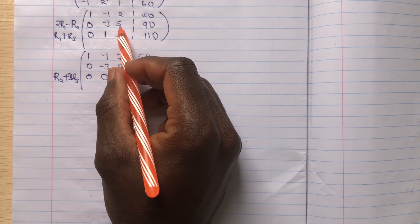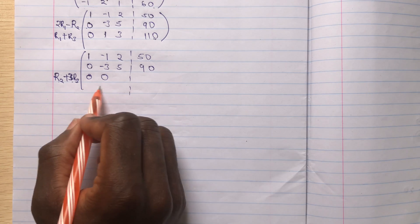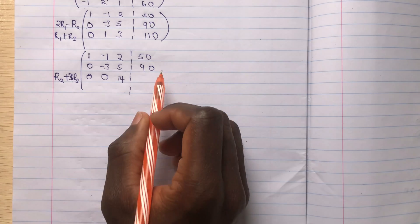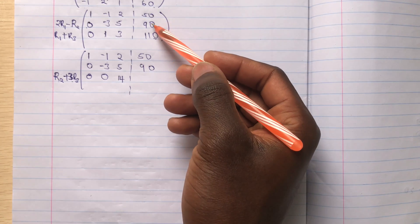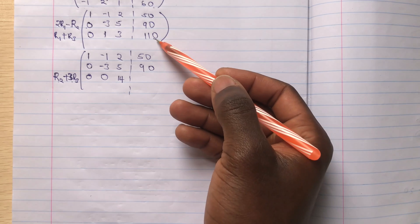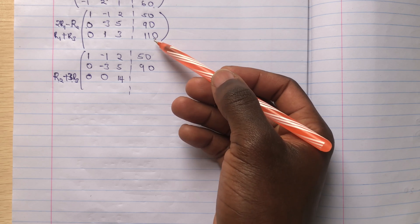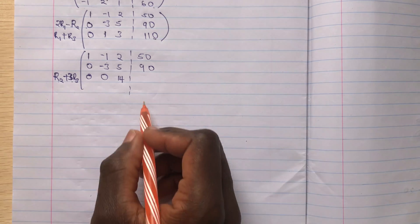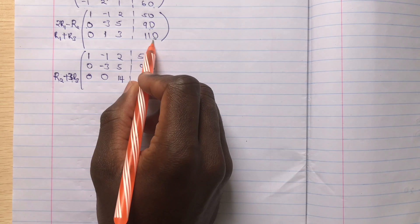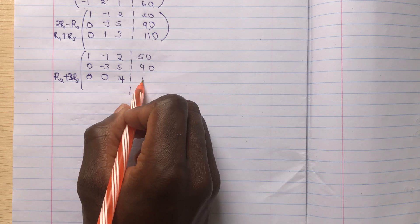Now going to this, this will be 5 plus 3 times 3, that's 9. So 5 plus 9, you get 14. Then here we go to 90 plus 110 times 3, that's 330 plus 90. So this is 330 plus 90, that's 420.